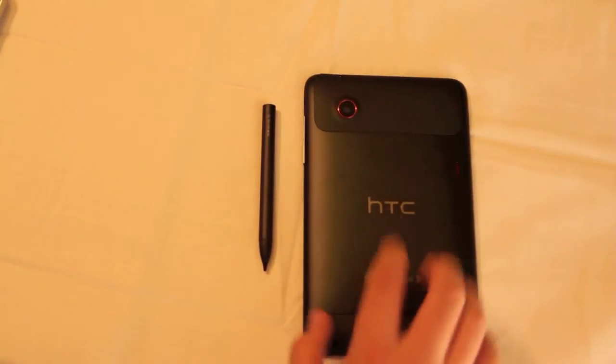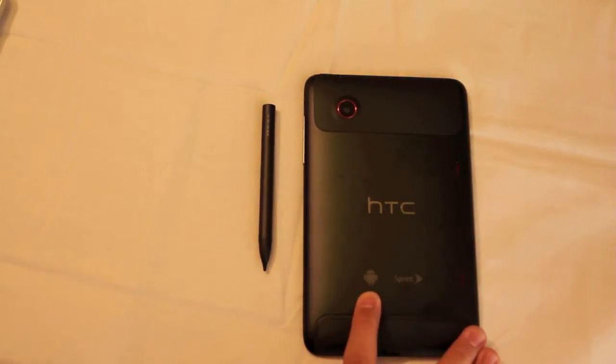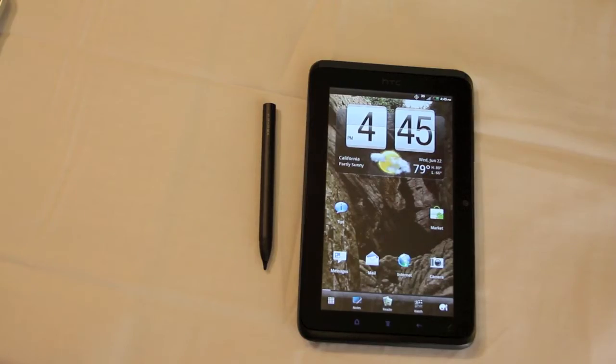On the back of this device, we have a 5 megapixel camera, which takes amazing photos, the HTC logo, an Android logo, and a Sprint logo. And this device has really great specifications, which is why it has such great features.